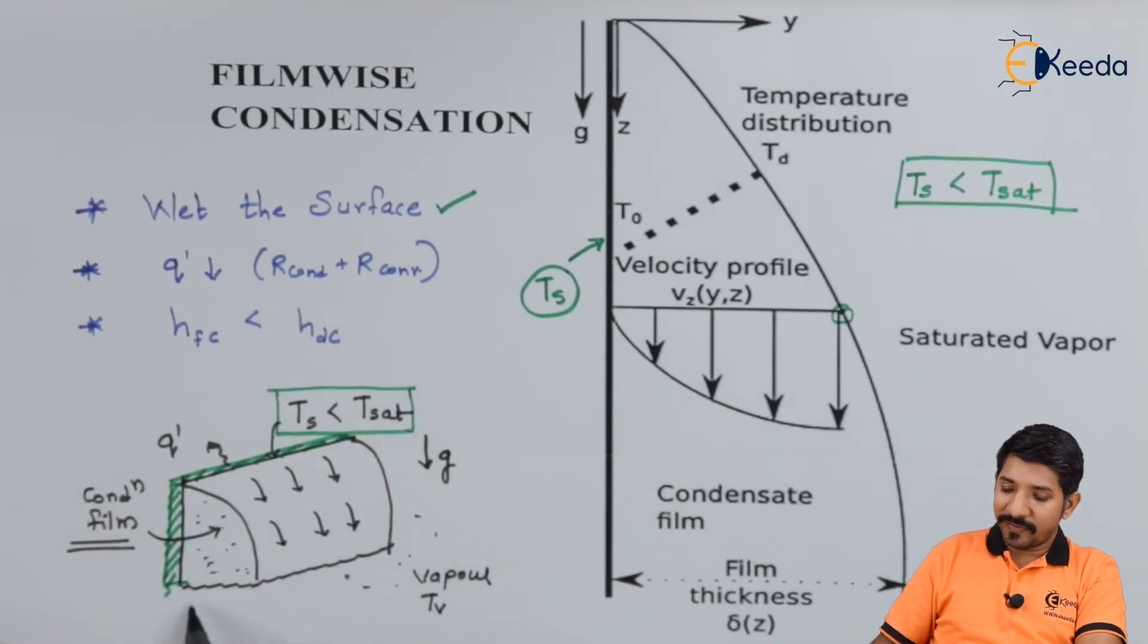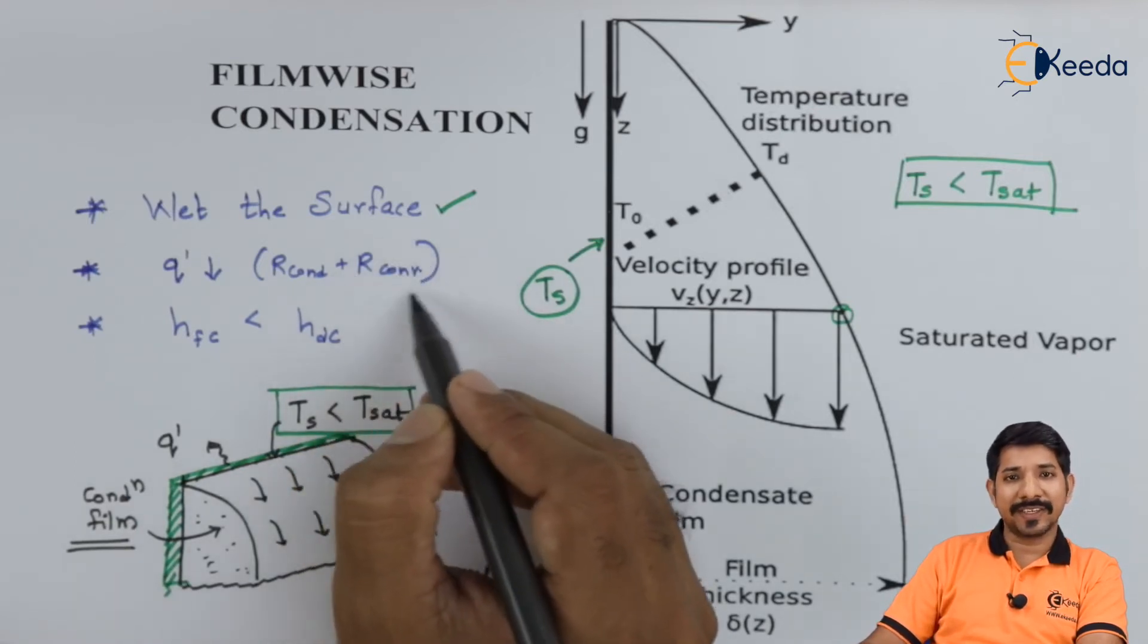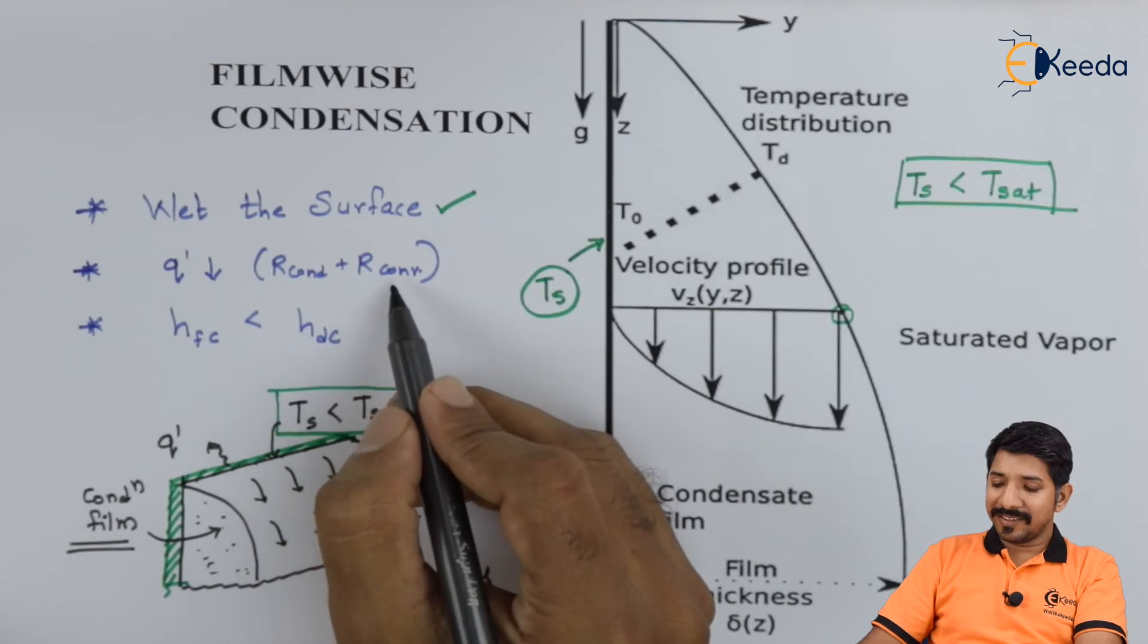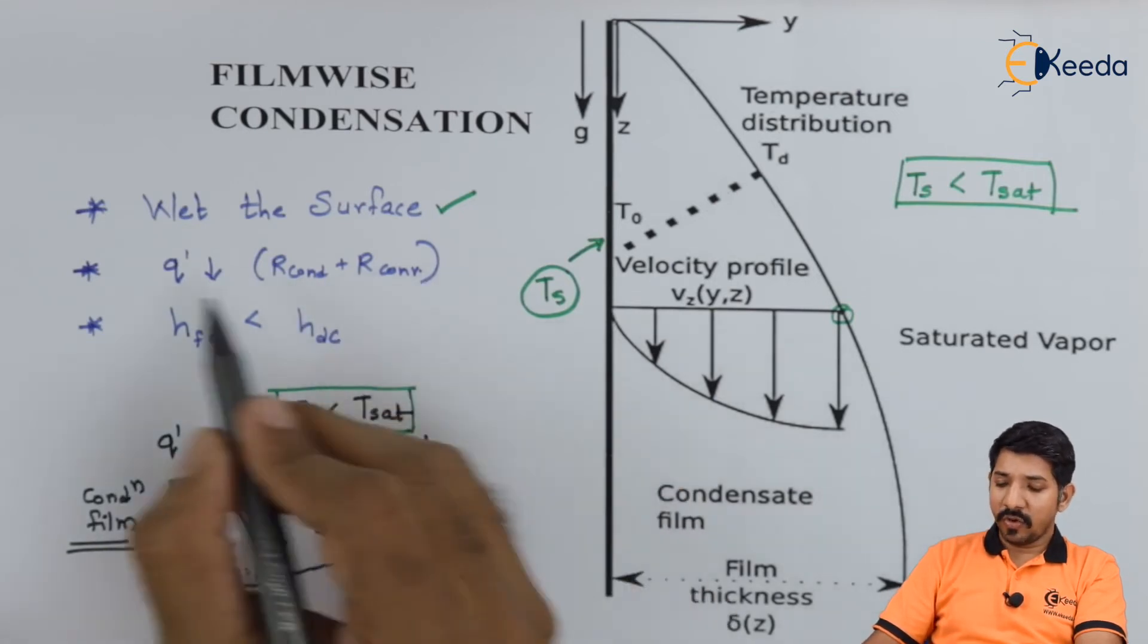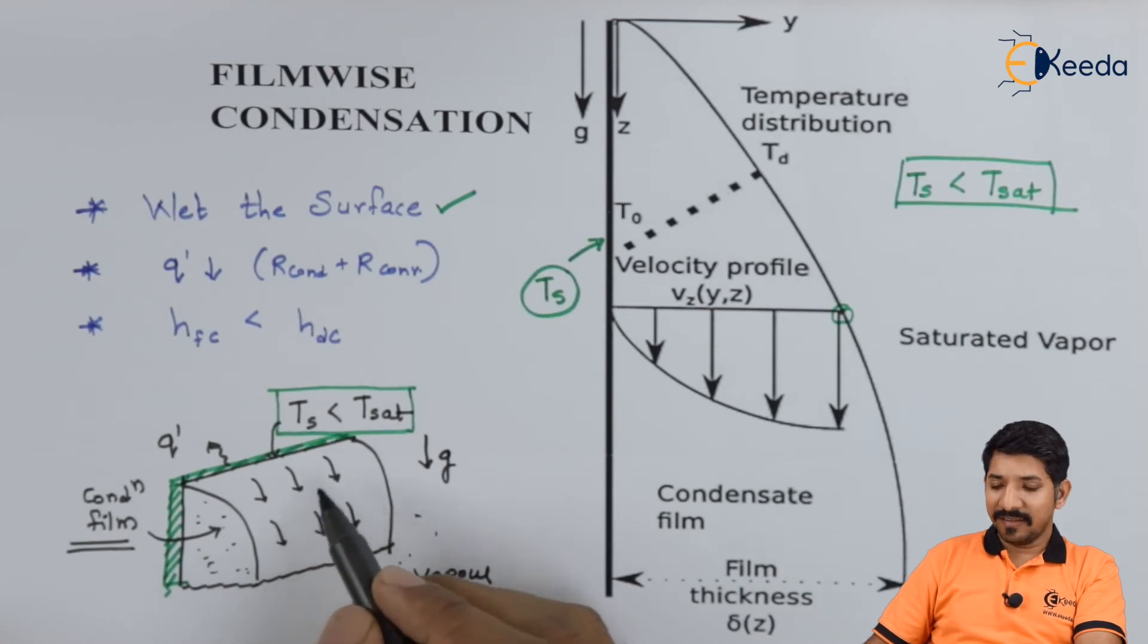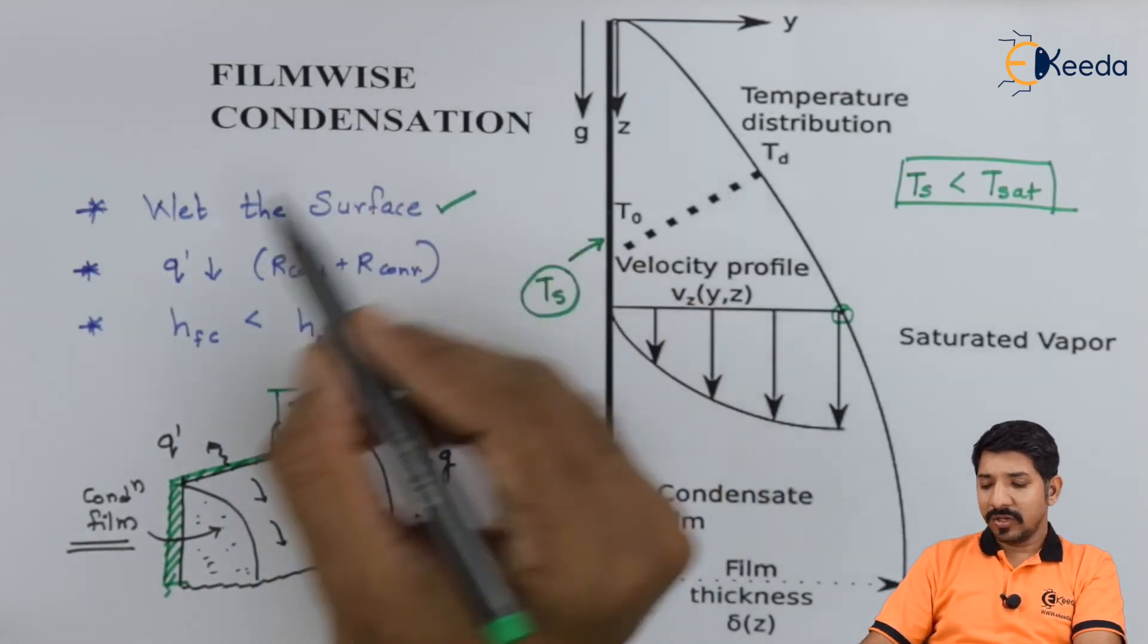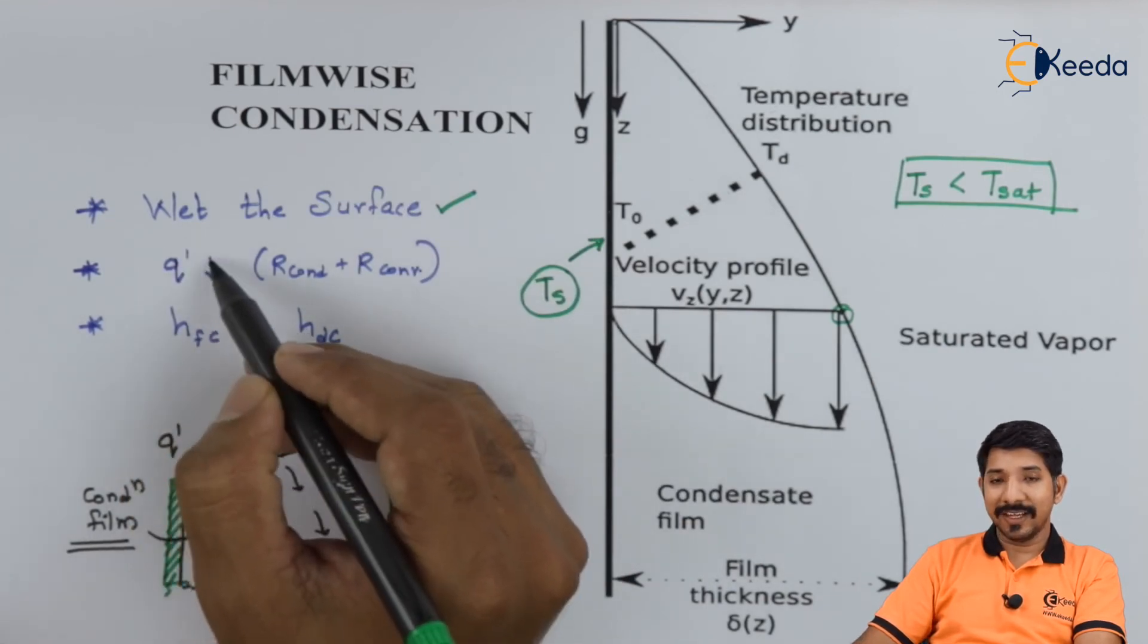The first layer of fluid and the first layer of surface will undergo thermal resistance provided by conduction, and then thermal resistance provided by convection. Because of these two resistances, the overall heat transfer rate is reduced. Compared to dropwise condensation, in filmwise condensation the overall heat transfer rate is reduced.